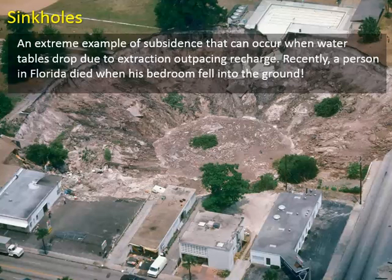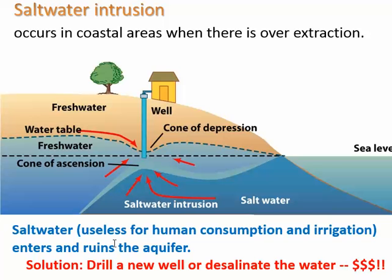In some cases you get sinkholes where the underground part can no longer support whatever is above it and the ground falls in — this happened in Florida. In places where you are pulling water out of the ground, you get what's called the cone of depression, where the water table becomes lower right around the point of extraction. When that occurs near coastlines, you can sometimes run the risk of saltwater intrusion, where saltwater can come in and get into your aquifer. That's really unfortunate because saltwater is not very useful — you can't drink it, and you basically have to drill a new well or desalinate the water.